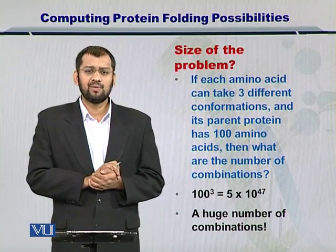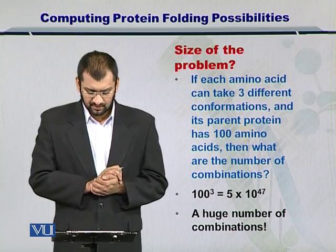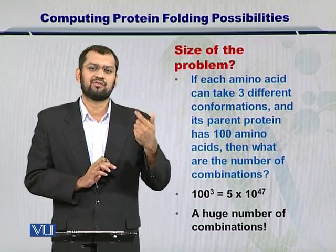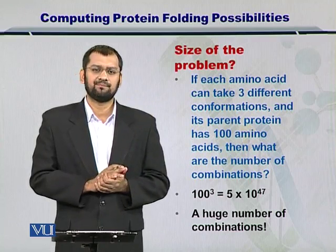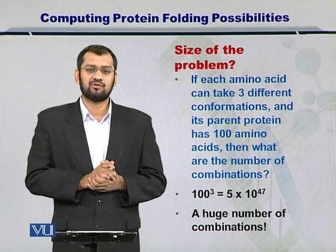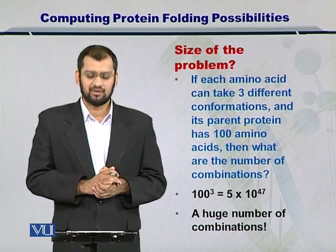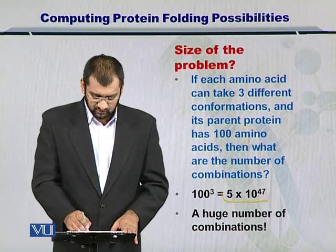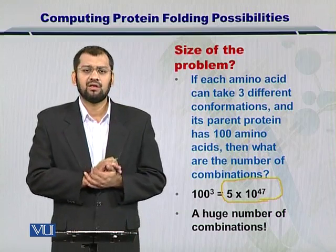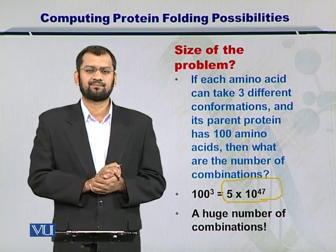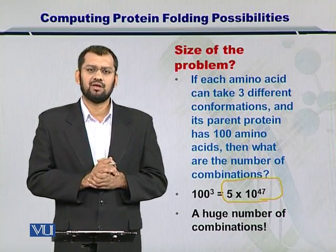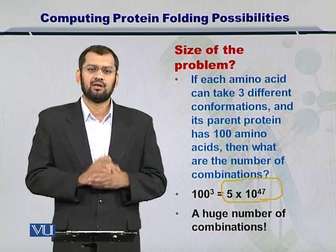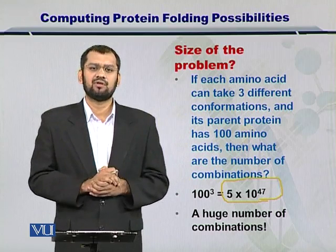Here I show you how many possible combinations can exist. If each amino acid can take 3 different conformations and a sample protein has 100 amino acids, then the possibilities that exist will at least be 3 to the power of 100, which equates to 5 × 10^47. That is a massive number of combinations. Just imagine the case if you were to consider a relatively large protein with 1000 amino acids — these combinations would increase exponentially.